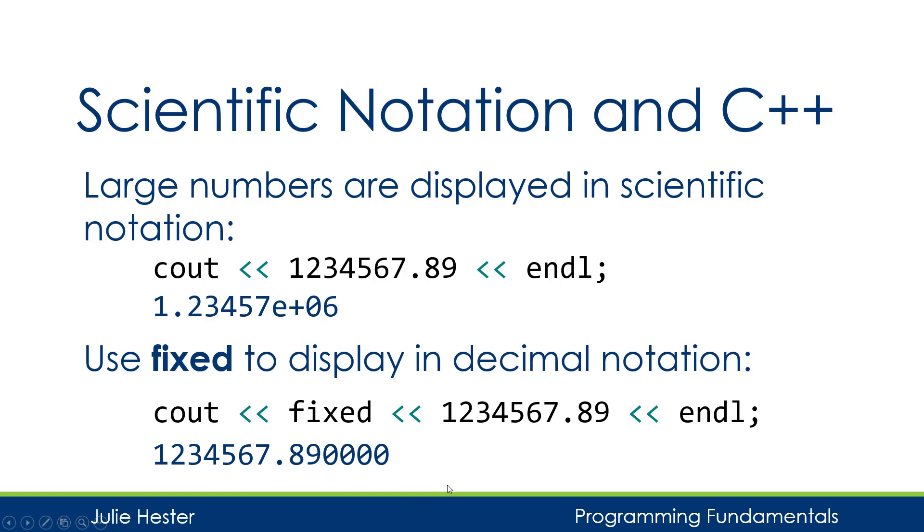And when I use fixed, the precision is the number of digits after the decimal place. So that's why I'm seeing 8, 9, 0, 0, 0, 0.